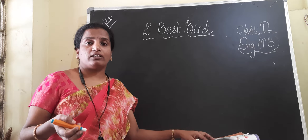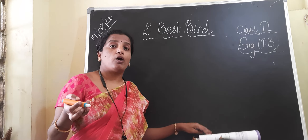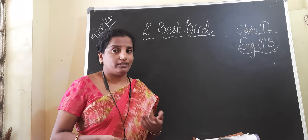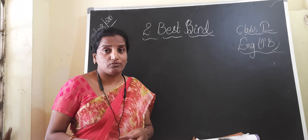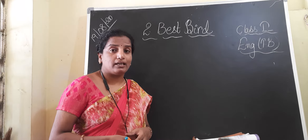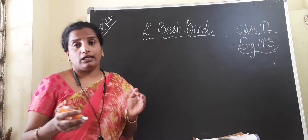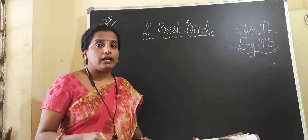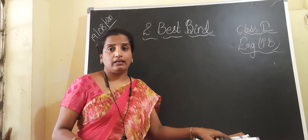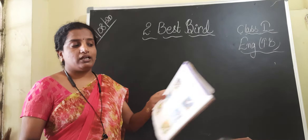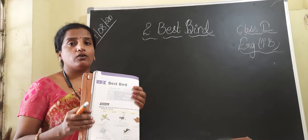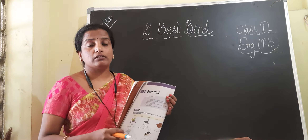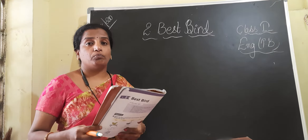We also discussed about the houses of different animals. The mouse was very happy in his hole, the kitten was happy in the basket, and the sparrows were happy in the nest. Now today, children, we are going to learn about a new lesson.